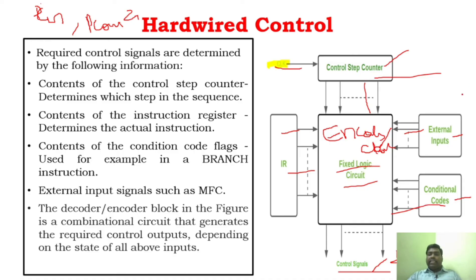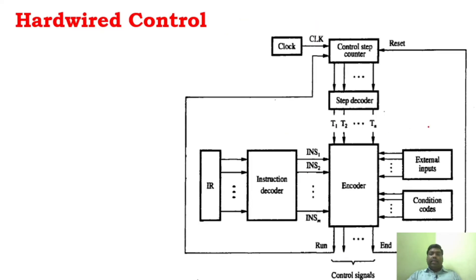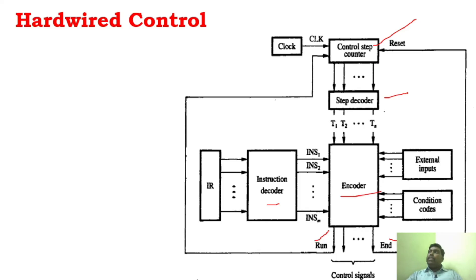Now you want to understand this basic circuit. In this circuit you have an encoder and decoder combined — that is the fixed logic circuit. We can also see a detailed view with the encoder and decoder as separate elements. In that detailed diagram, you have the instruction register, external inputs, conditional codes, and control step counter separately. When you have encoder and decoder separately, you have something called a step decoder, which will generate separate outputs. You can see control signals such as 'run' and 'end' in the diagram.